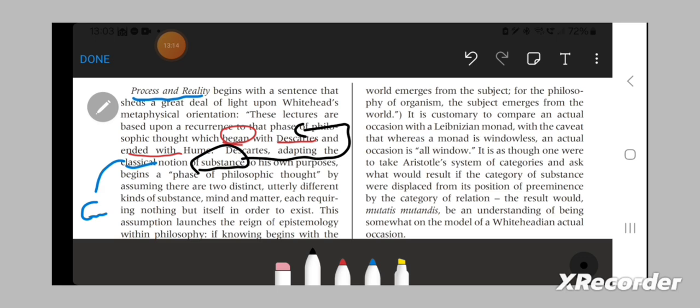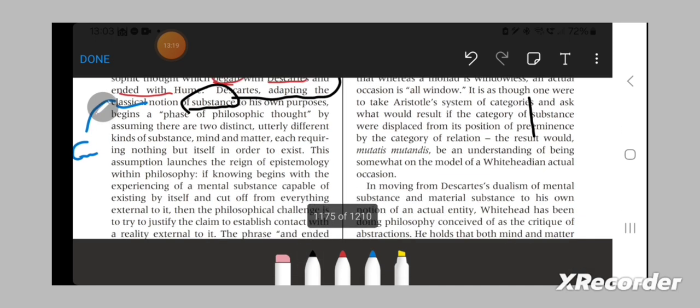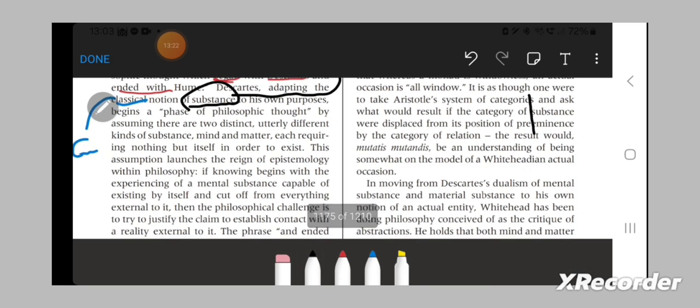Descartes, adapting the classical notion of substance to his own purposes, begins a phase of philosophical thought by assuming that there are two distinct, utterly different kinds of substance: mind and matter, although it should be remembered that for him, substance in the genuine sense is only God.